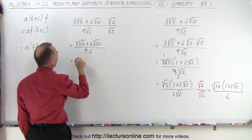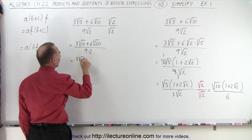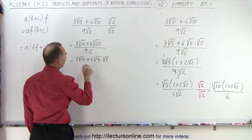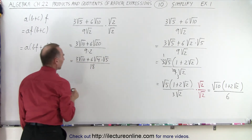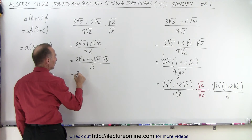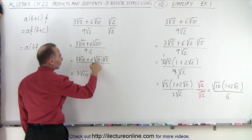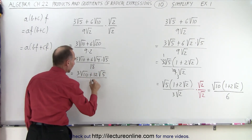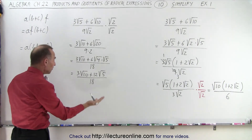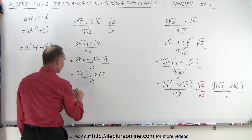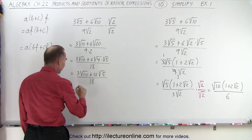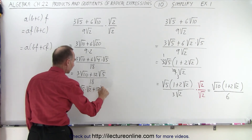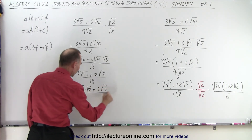When we simplify, notice that this is 3 times the square root of 10, plus 6 times the square root of 4 times the square root of 5, all divided by 18. Then this equals 3 times the square root of 10, plus — the square root of 4 is 2, so 2 times 6 is 12 — 12 times the square root of 5, all divided by 18. Now we realize we can factor out a 3, and also a square root of 5, because this is 3 times the square root of 5 times the square root of 2, plus 12 times the square root of 5, all divided by 18.